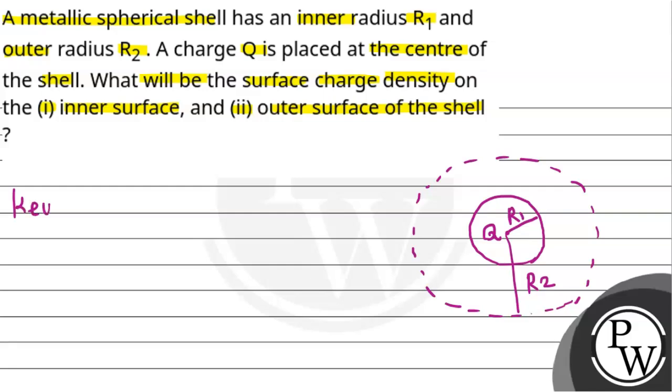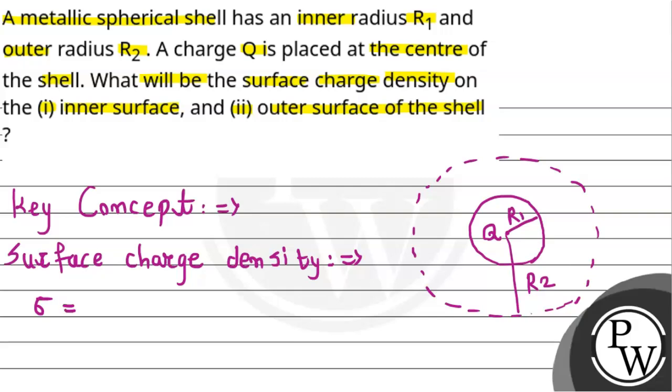So we will start with the solution. But before that, let's talk about the key concept which we are going to use here for this question. We have surface charge density, which can be given as sigma equals to the charge enclosed by area, because this charge has been placed at the center of the shell.